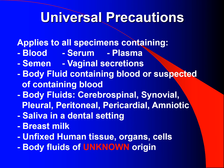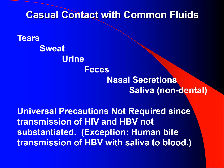Universal precautions apply to all specimens containing blood, serum, plasma, semen, vaginal excretions, bodily fluids containing blood, or cerebrospinal, synovial, pleural, peritoneal, pericardial, amniotic fluids, saliva in a dental setting, breast milk, unfixed human tissue, organs, or cells, and bodily fluids of unknown origin. Casual contact with common fluids — tears, sweat, urine, feces, nasal excretions, saliva (non-dental) — does not require universal precautions, since transmission of HIV and HBV has not been substantiated. Exception: human bite transmission of HIV with saliva to blood.